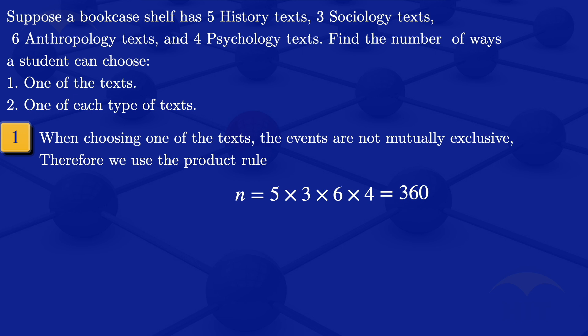Now when we are looking at one of each type of texts, that's for number two. If you take one history text, that means you would exclude the other four because we are seeing one of each type. So choosing one excludes the other ones. When choosing one of each type of texts, the events are mutually exclusive.